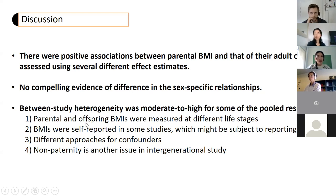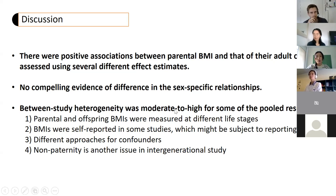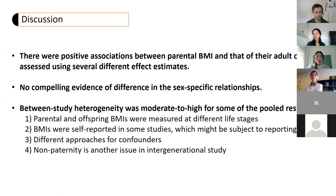Several additional problems should be mentioned. Parental and offspring BMI were measured at different life stages — offspring might be measured in their early 20s, 30s, or during middle or late adulthood. In some studies, BMI was self-reported, making them subject to reporting bias. There were also different approaches to confounders: for gestational age and birth weight, we think these are on the pathway between parental and offspring BMI and therefore should not be adjusted, but some studies adjusted for these mediators. Non-paternity is also an issue and may attenuate the association.